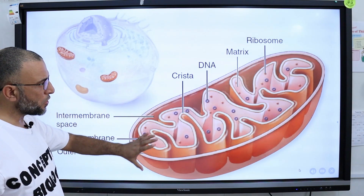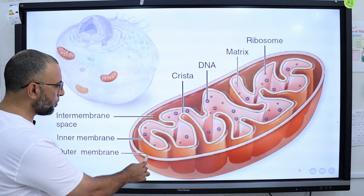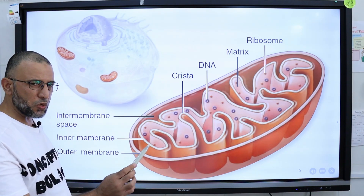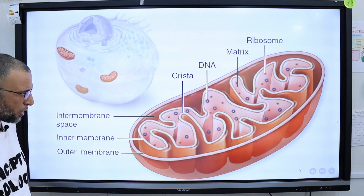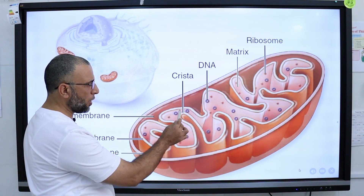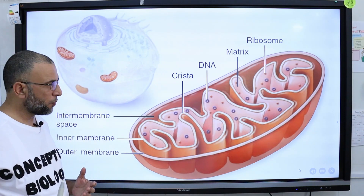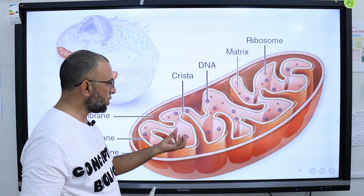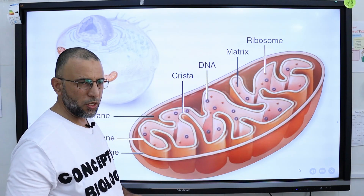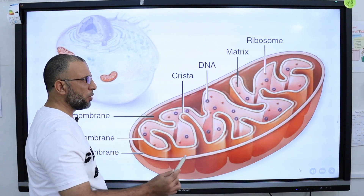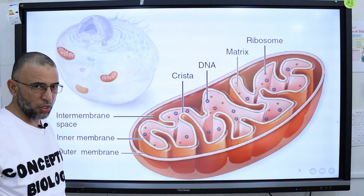This is an enlarged structure of a mitochondrion. The outer mitochondrial membrane and inner mitochondrial membrane are visible, and in between there is a space called the inter-membrane space. The inner mitochondrial membrane has many folds called cristae. The contents enclosed by the inner mitochondrial membrane form the mitochondrial matrix, which contains ribosomes and its own DNA.